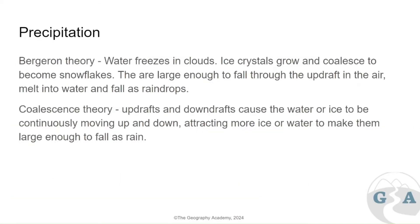There are two main theories of precipitation. The Bergeron theory looks at ice crystals growing and coalescing in clouds, forming snowflakes. Updrafts move upward through the clouds, keeping smaller, lighter particles aloft so they continue to coalesce and grow. This continues until the updraft lessens or the ice crystals are large enough to fall. As they fall, they melt and turn into liquid water, forming raindrops.